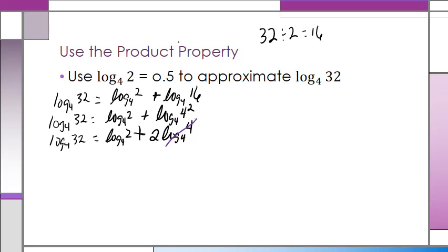And now we're going to substitute in this 0.5 for log base four of two. So we've got log base four of 32 equals 0.5 plus, well, two times one is just two. And we can finish this off. Log base four of 32 equals 2.5.